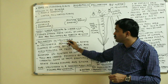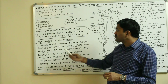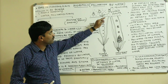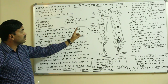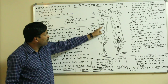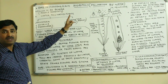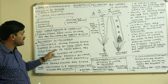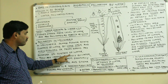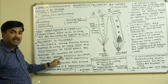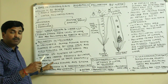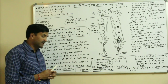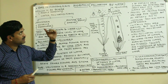Now let's look at the case history of pollination in Vallisneria. The female flower reaches the surface of the water via its long spiral stalk. At the same time, male flowers bearing pollen grains are released on the surface and are carried passively by water currents, so some pollen grains come in contact with the stigma and pollination occurs.